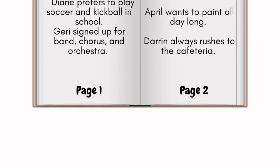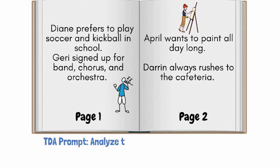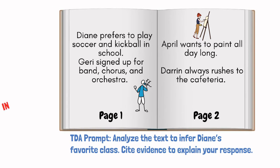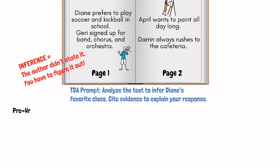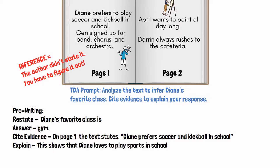How about we try a medium example now? For the medium example, let's pretend the passage is: Diane prefers to play soccer and kickball in school. Jerry signed up for band, chorus, and orchestra. April wants to paint all day long. Darren always rushes to the cafeteria. What if your TDA prompt for that passage was: analyze the text to infer Diane's favorite class. Cite evidence to explain your response.